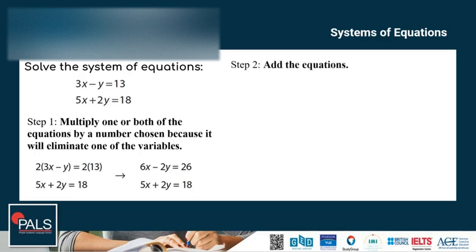Step 2: add the equations. Adding them together, the y terms cancel out because negative 2y plus 2y is 0. That gives me 11x is equal to 44.